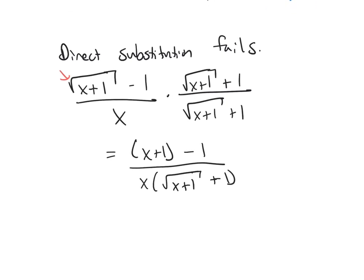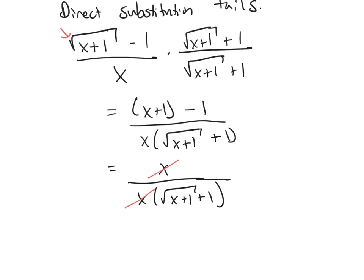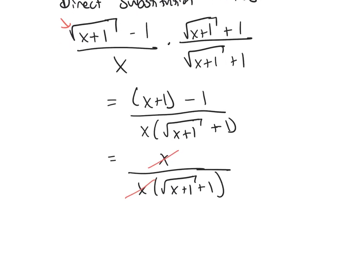Well, if I simplify here in the top, we'll see that I now have the same thing in the numerator and denominator. I have an x in both places, which means I can then cancel it because, again, we're not letting x be 0.